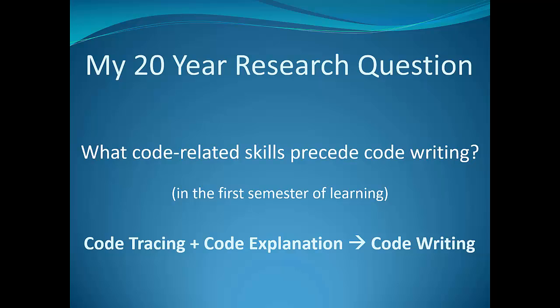The answer: the ability to write code is related to two prerequisite skills. One of those is code tracing, where the student is given a piece of code, they're given some initial values for variables, and they track the changes of variable values as the code is executed, possibly on a piece of paper. Then they can tell you what values are in the variables after the code is stopped.